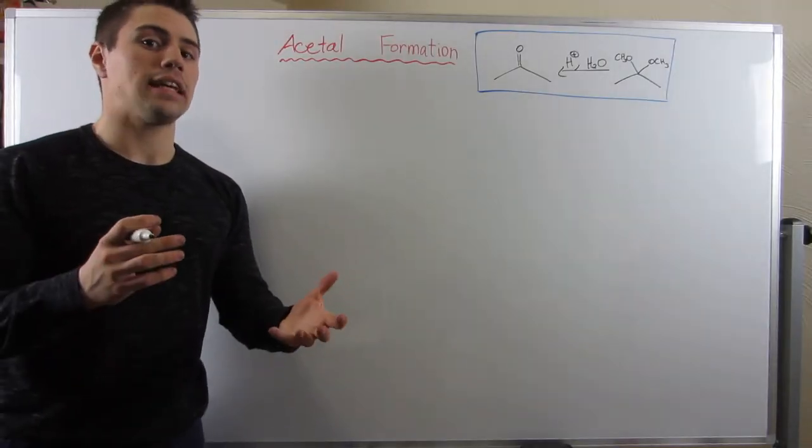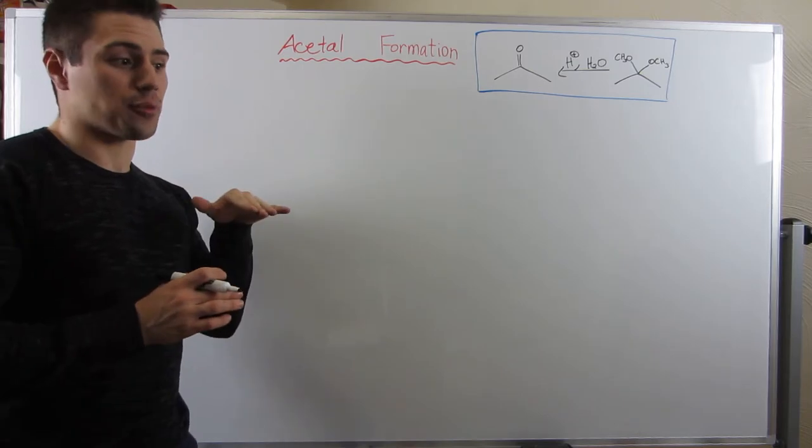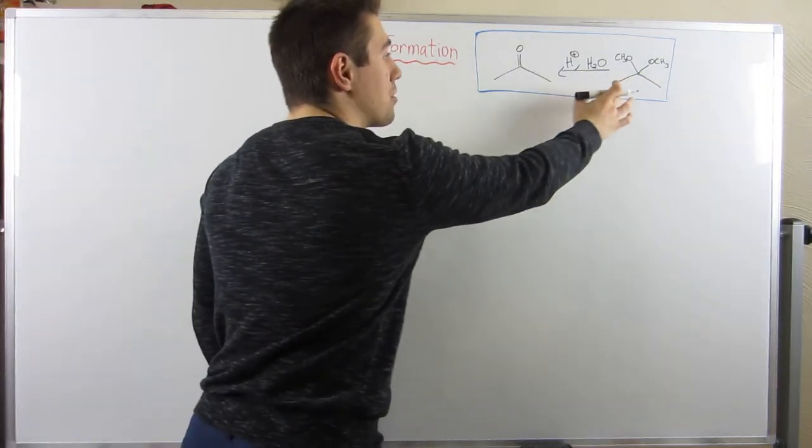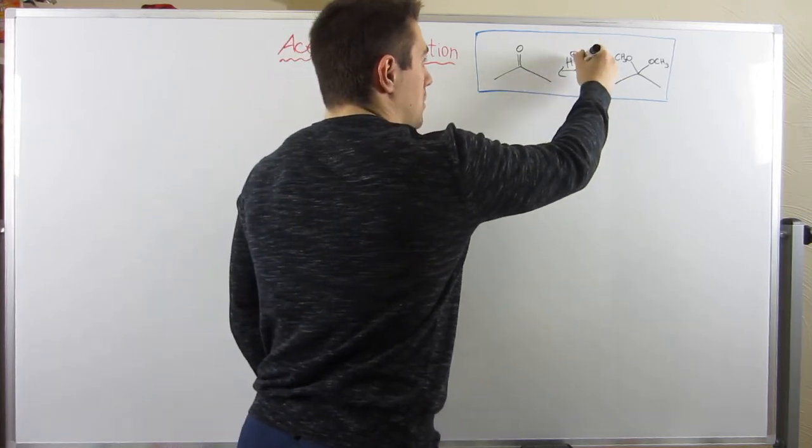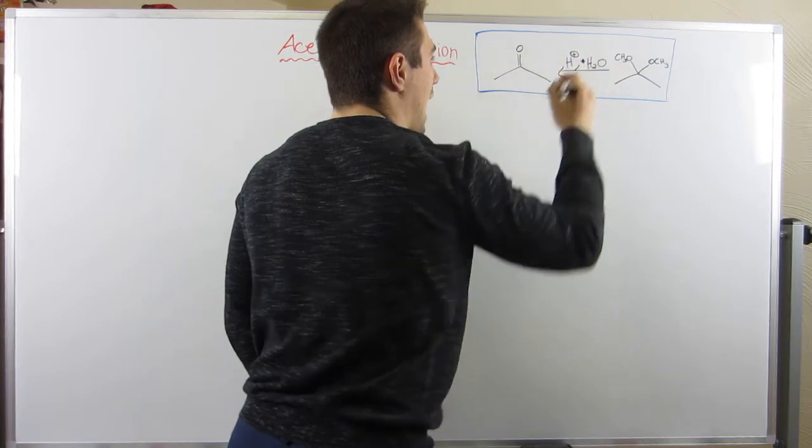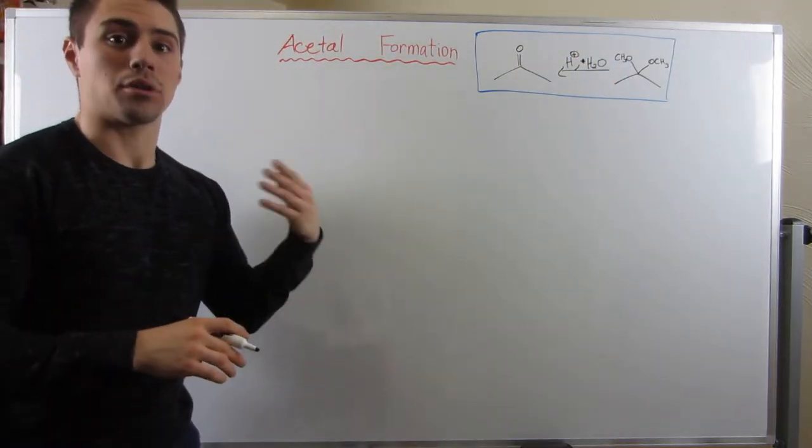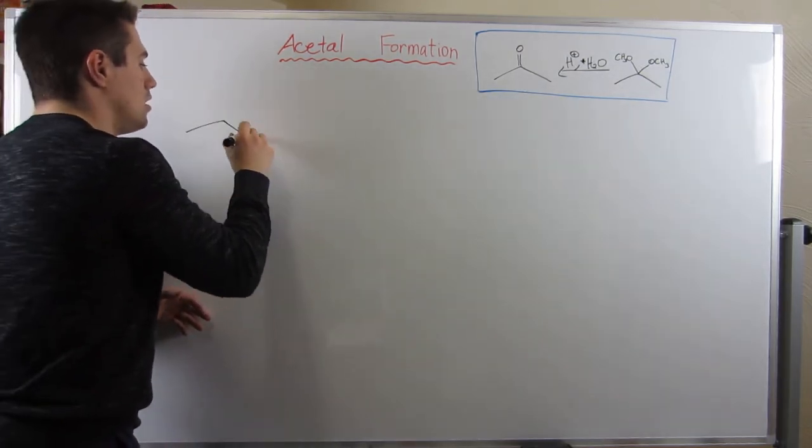Okay, gang. So unlike in the forward mechanism where we take water away and it helps drive the reaction forward, if we're going to do the reverse reaction, if we're going to start with our acetal and go back to the carbonyl, we actually have to add water in. We're going to add water back in and that's going to drive away the acetal and recover our carbonyl. So let's just get right into it.